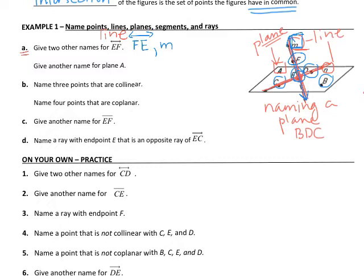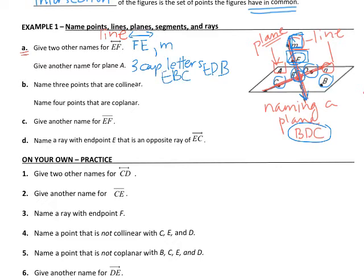Give another name for plane A — we've done that: it's BDC. It has to have three capital letters, and it has to be letters that are on the plane. Remember, plane A doesn't have a dot next to it, so that capital letter is not indicating a point. F is not on the plane, so we cannot use F. So we could also call it EDB or EBC — we can't use F and we can't use A.